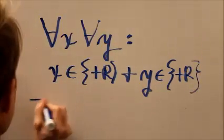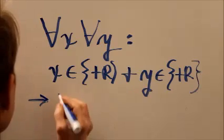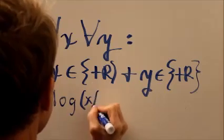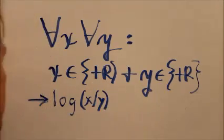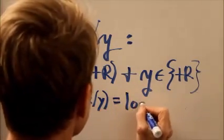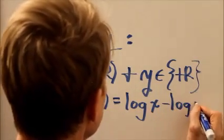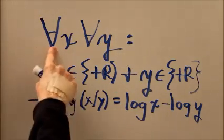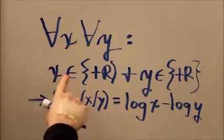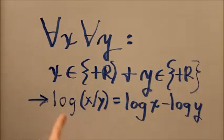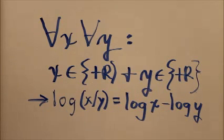Then, the logarithm of x divided by y equals the logarithm of x minus the logarithm of y. For all x and for all y, if x is a positive real number, and y is a positive real number, then the logarithm of x over y equals the logarithm of x minus the logarithm of y.